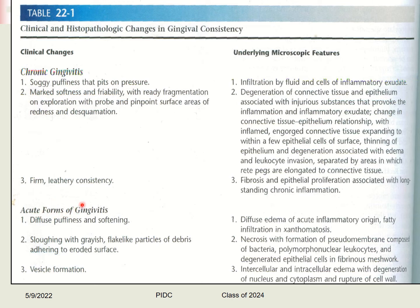During acute forms of gingivitis, diffuse puffiness and softness indicate diffuse edema of acute inflammatory origin or fatty infiltration in xanthomatosis. Flowing grayish flake-like particles of debris adhering to eroded surfaces indicate necrosis with formation of a pseudomembrane composed of bacteria, leukocytes, and degenerated epithelial cells. Vesicle formation indicates intracellular and extracellular edema with degeneration of the nucleus and cytoplasm and rupture of the cell wall.